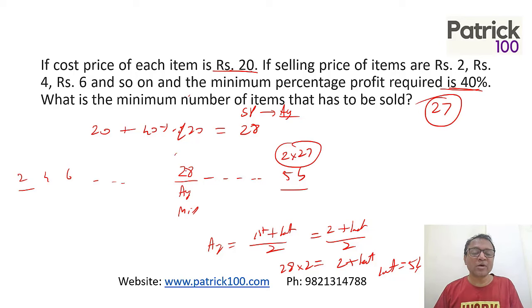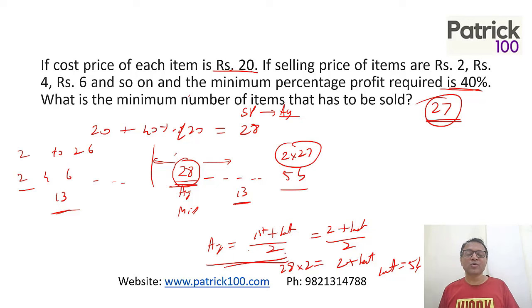You can also directly calculate once you know 28 is the middle term. Before 28, you have 2 to 26 - that's 13 terms. After 28, there are 13 terms. So 13 terms before, 13 terms after, plus the middle term 28, gives you a total of 27 terms. For arithmetic progression, remember the middle term is the average, and the average is first term plus last term divided by 2.